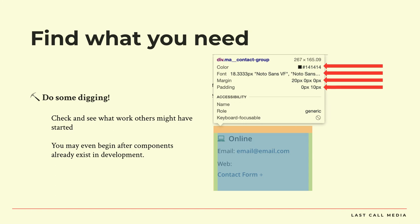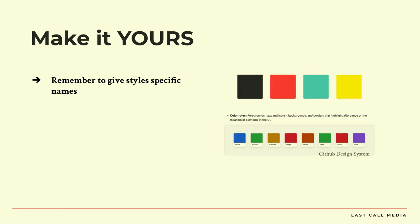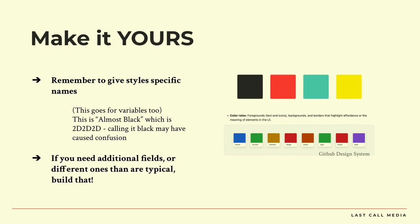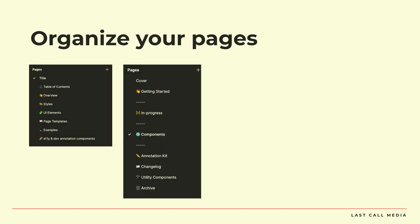Make sure to make it yours. Give styles or variables specific names. This is the Last Call Media black — it's almost black, it's 2D2D2D. Calling it 'black' might have caused confusion because someone would have just put in straight black, and that doesn't have the softness we intended. If you need additional fields or different ones that are typical, build that — like our Franken card. I've noticed a lot of people are using color roles now, which is design creeping closer to development. There's attention, success, open, closed — that's from the GitHub design system — and a lot of folks are using roles to describe colors. Organizing your pages is super helpful. Label and organize your page well — it helps anyone navigate the file. Even if terms are slightly different — components, UI elements — they'll still be able to find what they need.